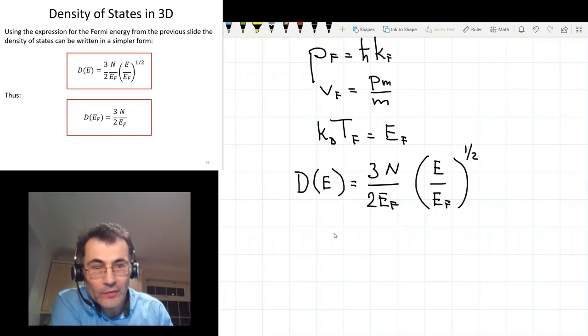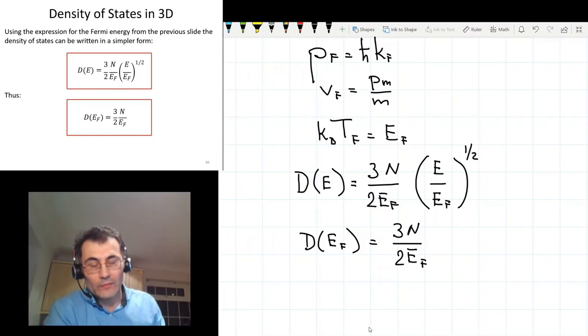And if we make energy equal to Fermi energy, then in this case, the density of states at the Fermi energy is simply three-halves of the total number of atoms divided by Fermi energy.